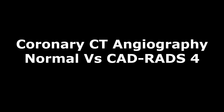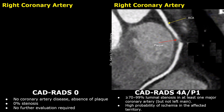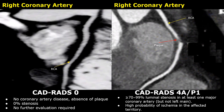Hello everyone, this is Dr. Sam and today we will learn about normal and CADRADS-4 on coronary CT angiography. We will also learn about high-risk plaques. We will compare the normal coronary artery appearance on CT angiography with coronary arteries that have severe coronary artery disease.